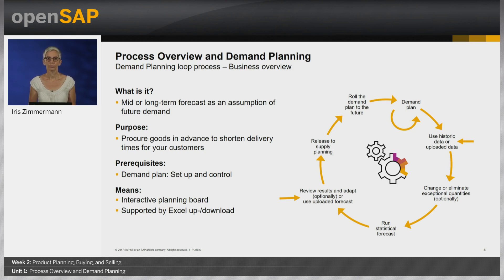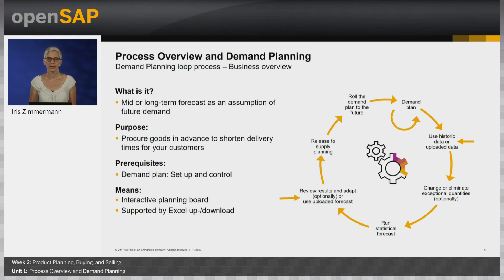Let me briefly explain the demand planning loop process. It starts with the setup and control of the demand plan, with similarly handled products assigned, forecast methods, time horizon, and so on. You can use historical sales data from SAP Business by Design as input for the forecasting models, or upload data from outside. You can change or eliminate exceptional quantities before running the forecasting model, and adapt the final forecast result if needed. Once confident with the forecast, you can release it as demand for supply planning. Before the next cycle, you can roll the demand plan forward, considering changes like new or phased-out products or a new forecasting model.